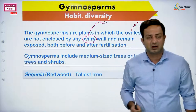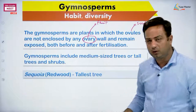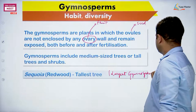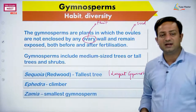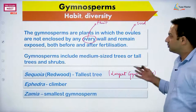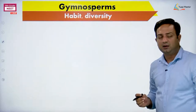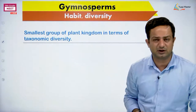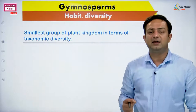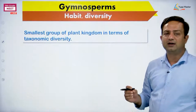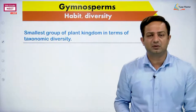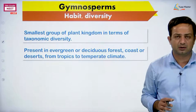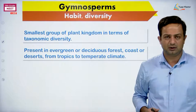Sequoia is the tallest and largest gymnosperm. Ephedra is a climber and Zamia is considered the smallest gymnosperm. In terms of taxonomic diversity, gymnosperms have the least number of species among all plant groups — algae, bryophyta, pteridophyta, angiosperms, gymnosperms — gymnosperms have the least. They are present in evergreen or deciduous forests, coasts, deserts, plains, hills, tropics, and temperate regions.